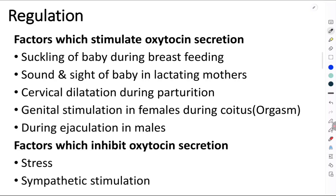Now let's understand the factors which increase and inhibit oxytocin secretion. The most important factor stimulating oxytocin secretion is suckling of the baby during breastfeeding. Second, even the sound and sight of the baby — not just suckling — when lactating mothers see or hear their babies, there is also an increase in oxytocin secretion.